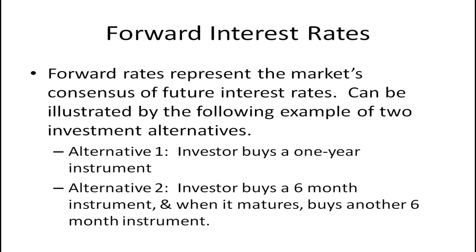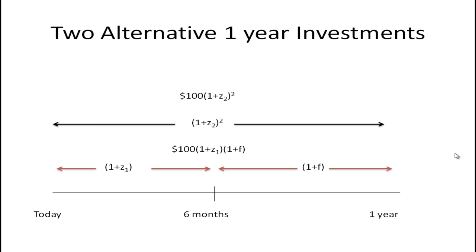Suppose you want to invest your money for one year. As an investor you could buy a one-year instrument or you could buy a six-month instrument and when it matures buy another six-month instrument. If you invested for example $100 you would get 1 plus z2 squared times $100. You're getting this interest rate for both periods.